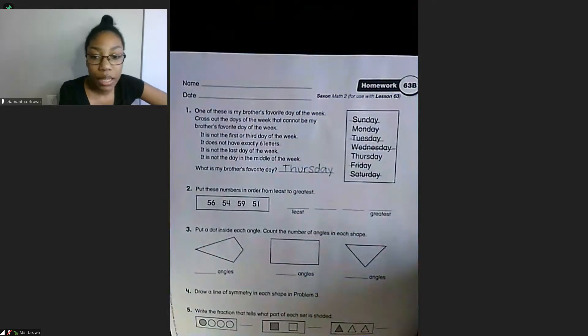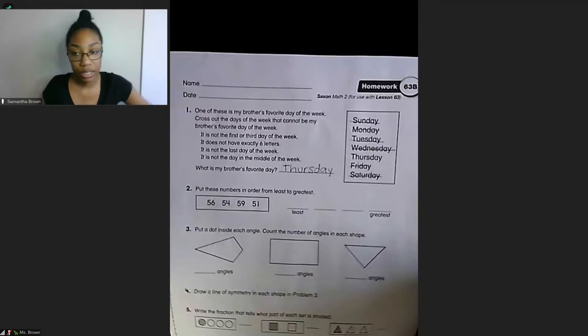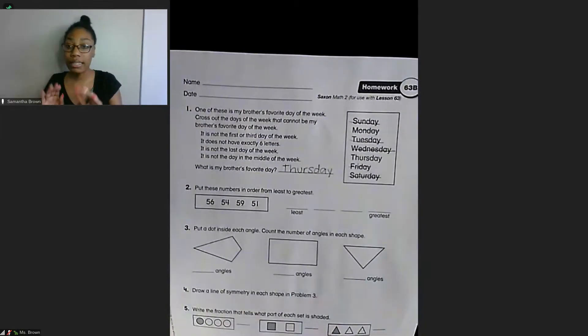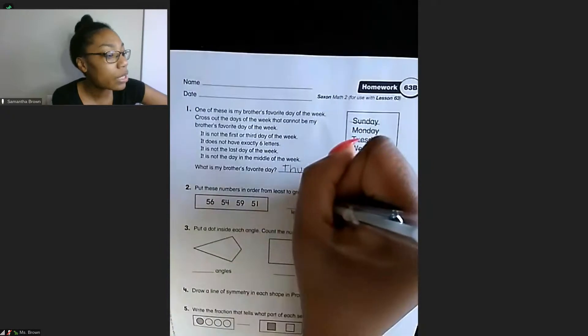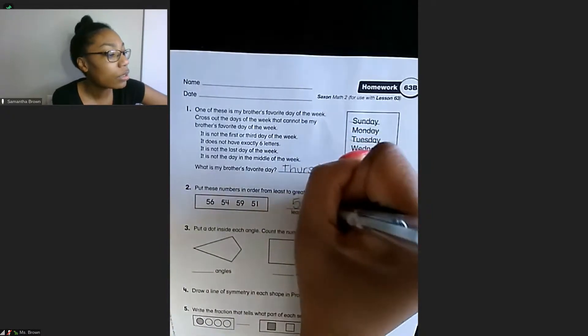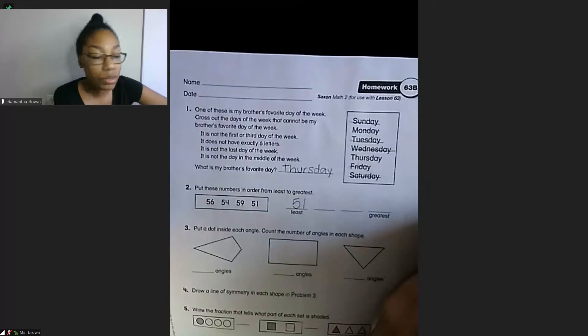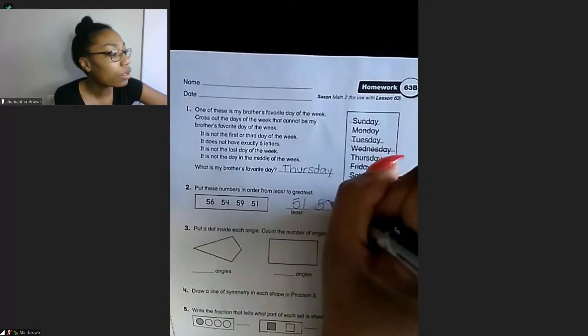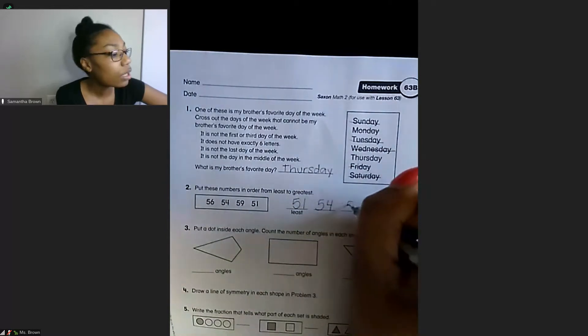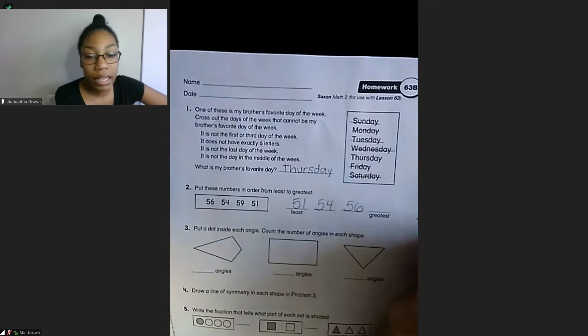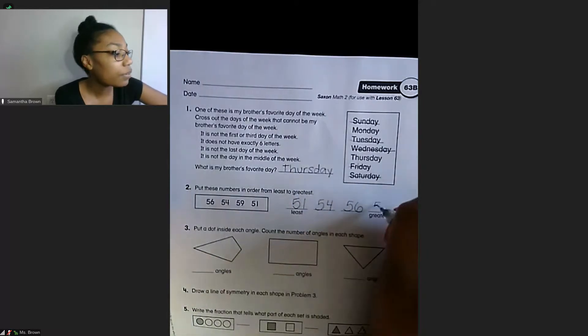Number two says put these numbers in order from least to greatest. So least is the smallest and greatest is the biggest. From left to right we need to move smallest to biggest. So looking here, it looks like my smallest number is 51. Next one is 54, 56, and then our greatest number, our biggest number, is 59.